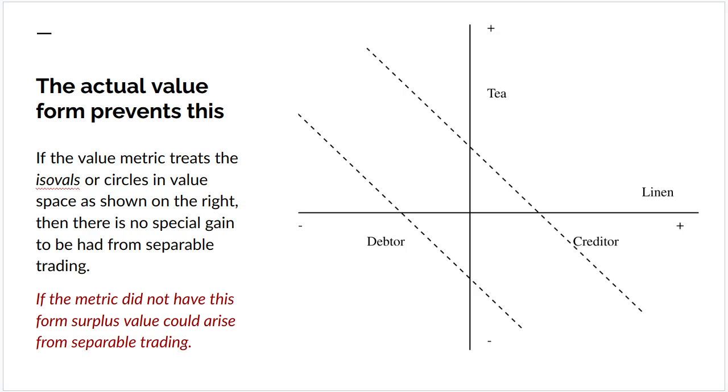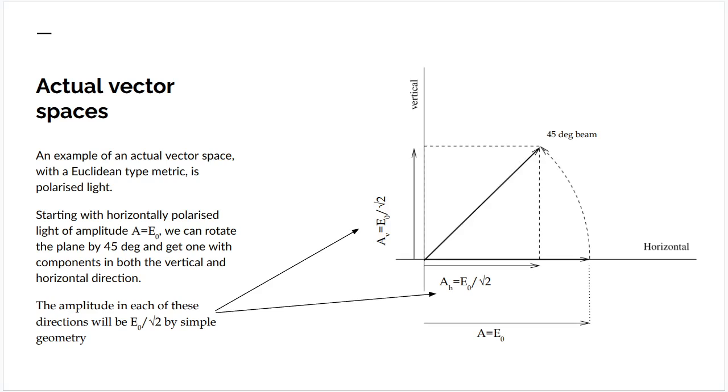I can't be bothered to prove it at the moment but you can work it out yourself. Now suppose we have an actual vector space and these really do exist in the world. Polarized light is an example of it. There are lots of other ones in quantum systems.